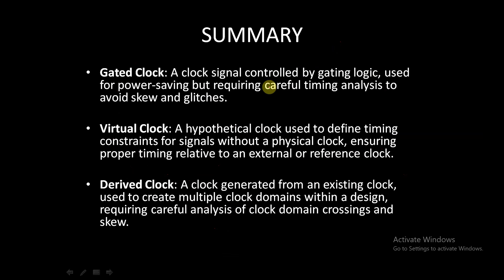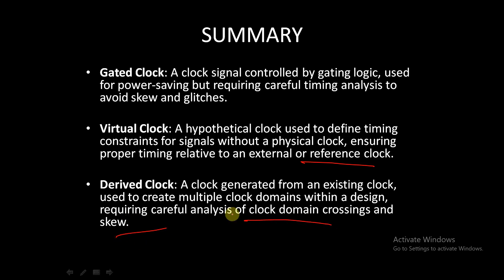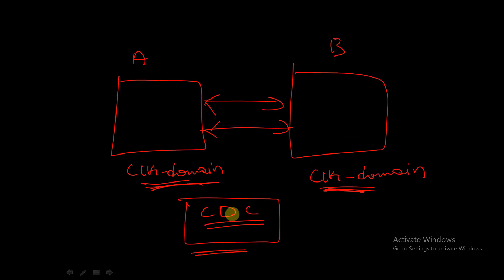In summary: a gated clock is a clock signal controlled by gating logic, used for power saving but requiring careful timing analysis to avoid glitches. A virtual clock is a hypothetical clock used to define timing constraints for signals without a physical clock, ensuring proper timing relative to an external reference clock. A derived clock is a clock generated from an existing clock, used to create multiple clock domains within a design, requiring careful analysis of clock domain crossing and skew — which we will discuss in upcoming sessions.